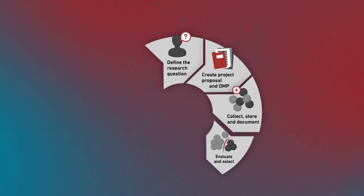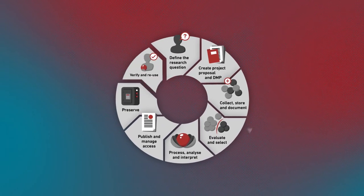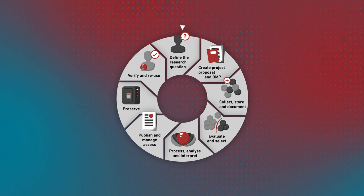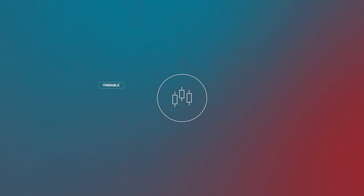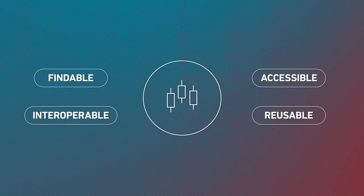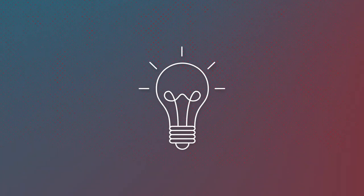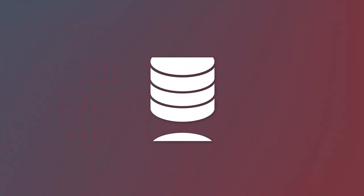The FAIR principles should be taken into account as early as possible in the research data lifecycle. At the latest, you will have to consider them when you upload data to a repository. In practice, it can be difficult to ensure that your research data adhere to the four principles. The ETH library can help you make your data FAIR. We can give you advice on preparing your data, or help you find the most suitable repository for your data.